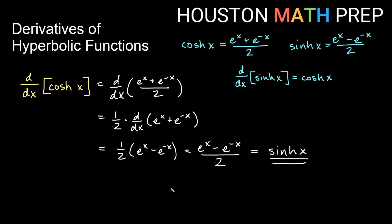So we notice that the derivative of regular cosine — the circular function — cosine of x is actually negative sine x. Notice a big difference here: the derivative of the hyperbolic cosine of x is exactly sinh of x, not negative sinh.